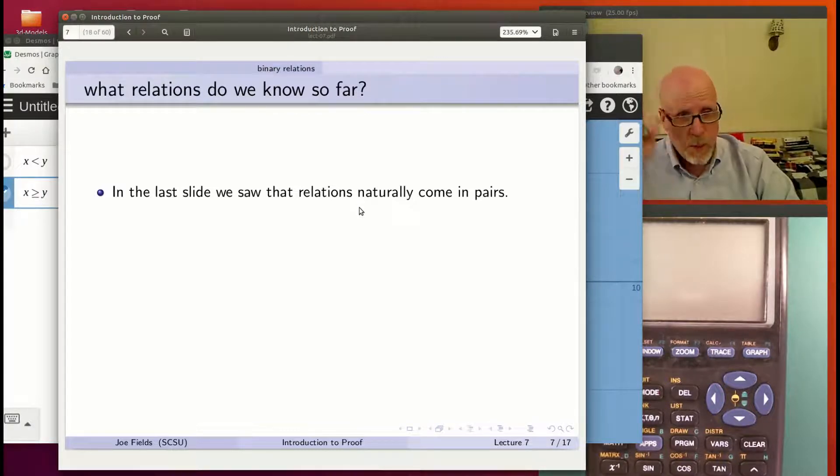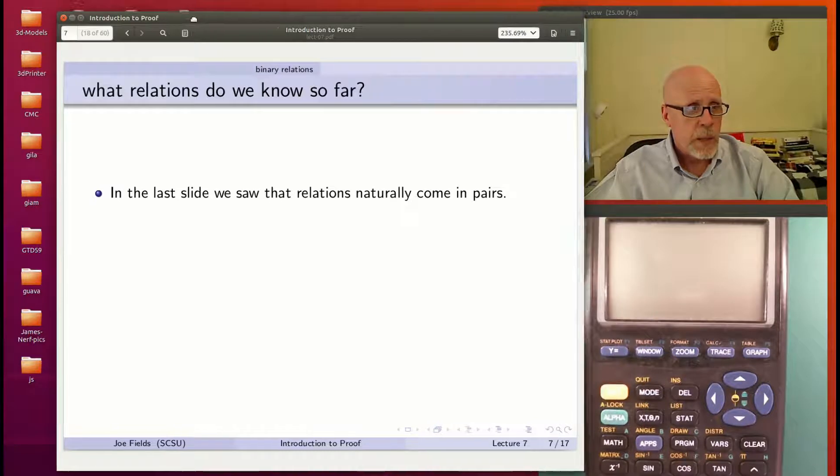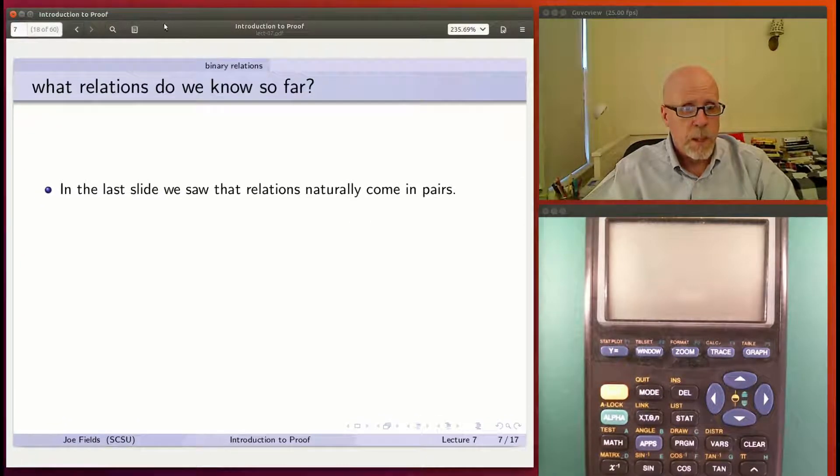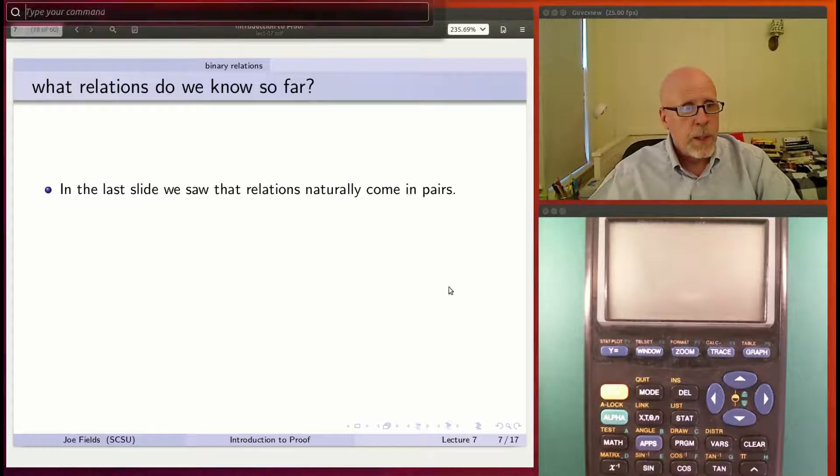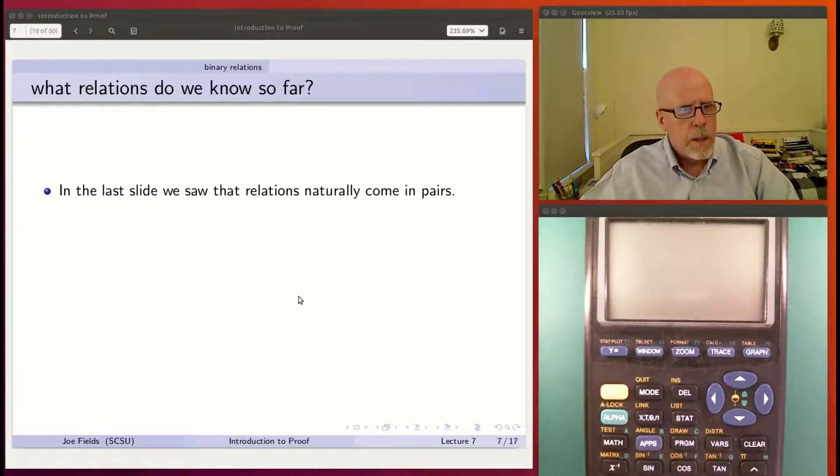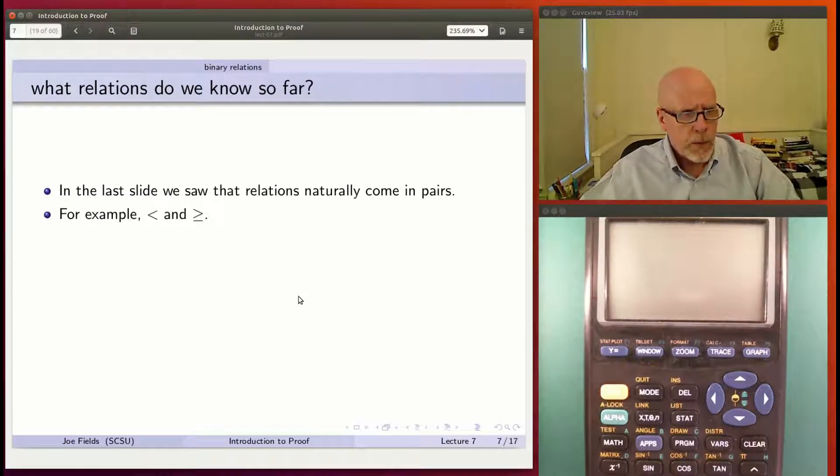We just did that. We compared their graphs. In this last slide that we just looked at, we saw that relations naturally come in pairs. More to the point, there is a notion of taking the negation of a relation, but it's true that a relation and its negation form a natural pairing.